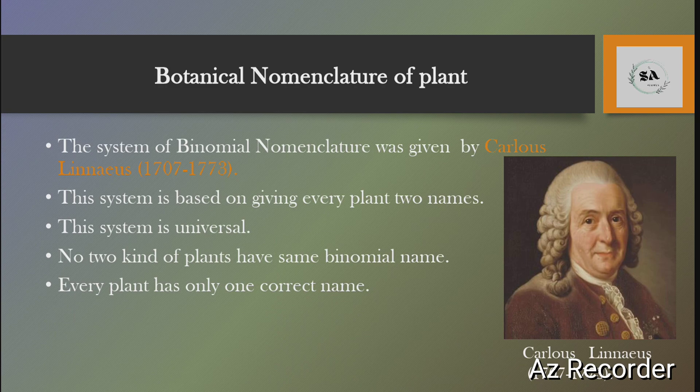The next topic is the binomial nomenclature of plants. The binomial nomenclature system was first introduced by Carolus Linnaeus, who was a great taxonomist. This system is based on giving each plant two names. The system is universal, and no two kinds of plant have the same binomial name — every plant has a separate and only one correct name.